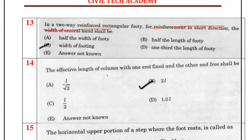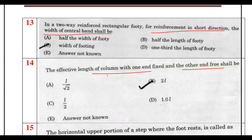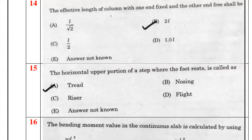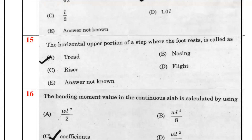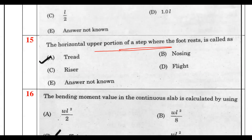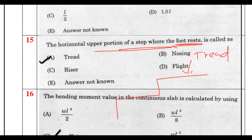The effective length of a column with one end fixed and the other end free is 2L. The horizontal upper portion of a staircase step is the tread, and the horizontal portion is also referred to as the tread.